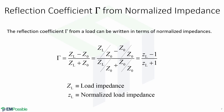The reflection coefficient from a load can also be written in terms of normalized impedances. The reflection coefficient is equal to the load impedance minus the impedance of the transmission line, divided by the load impedance plus the impedance of the transmission line. If we divide every term by the impedance of the transmission line, we obtain the reflection coefficient in terms of normalized load impedance.